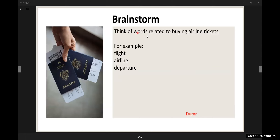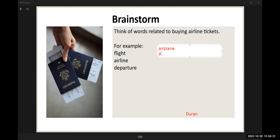Think of words related to buying airline tickets. For example, we've got flight, airline, and departure. What can we think of that relates to airline tickets? Well, for the flights, we might have airplane. You can say airplane, or you can say plane, or even aircraft — there are lots of ways to say it.